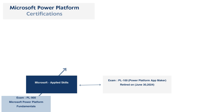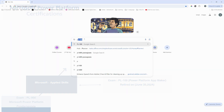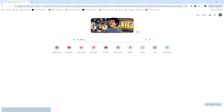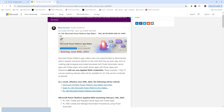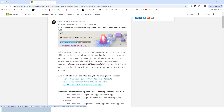The next certification is PL-100, which is Microsoft Power Platform App Maker. PL-100 certification has been retired on 30 June 2024 and is not available now. If you search for PL-100 on Google and click the first link, then scroll down, you will see a link for exam PL-100 Microsoft Power Platform App Maker.